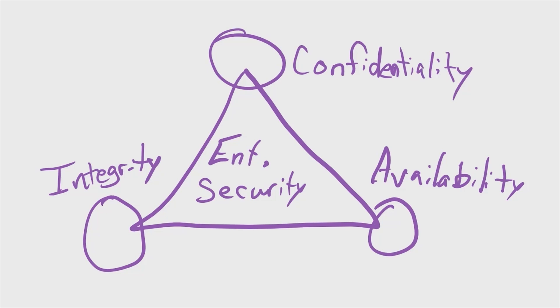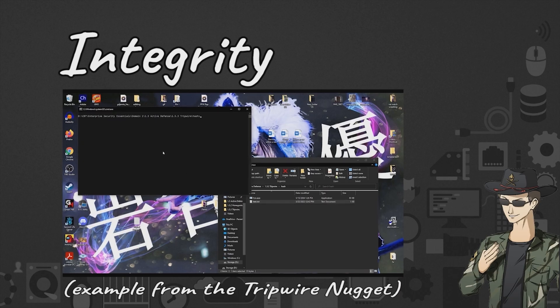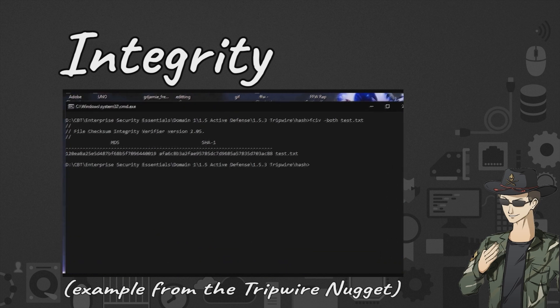If we take a look at the overall triad itself, it's made up of three major components: integrity, confidentiality, and availability. For integrity, we're just ensuring that the data is correct, and we covered a lot of how this is done in the previous domain. For example, hashing.